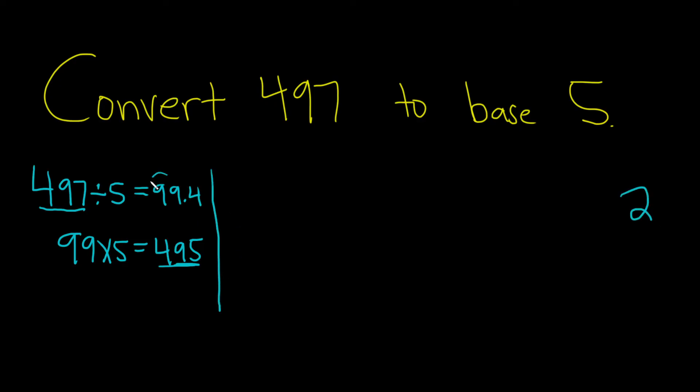Then you do it again with this number. 99 divided by 5. If you put this in your calculator, you get 19.8. Again, we're looking for the remainder. This means 5 goes into 99 evenly 19 times. There's a fractional part left over we need to figure out.